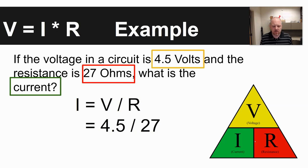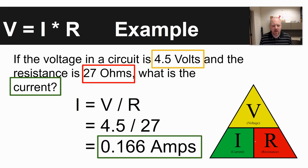Plugging in the values that were given, you take 4.5 divided by 27. Make sure you don't fall into the trap of just taking the big number divided by the little number. When you go through and solve, you come up with 0.166 amps as an answer.